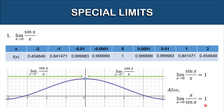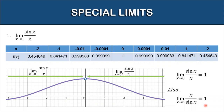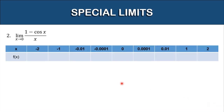Let's have the second special limit: the limit of 1 minus cosine x, all over x, as x approaches zero. The same as what we did in number one — let's first have a table of values and set values for x that are approaching zero from the left and from the right.